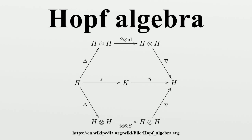Representation theory: let A be a Hopf algebra, and let M and N be A-modules. Then M⊗N is also an A-module, with the action on M⊗N given via delta. Furthermore, we can define the trivial representation as the base field K with the action on K given via the counit epsilon.